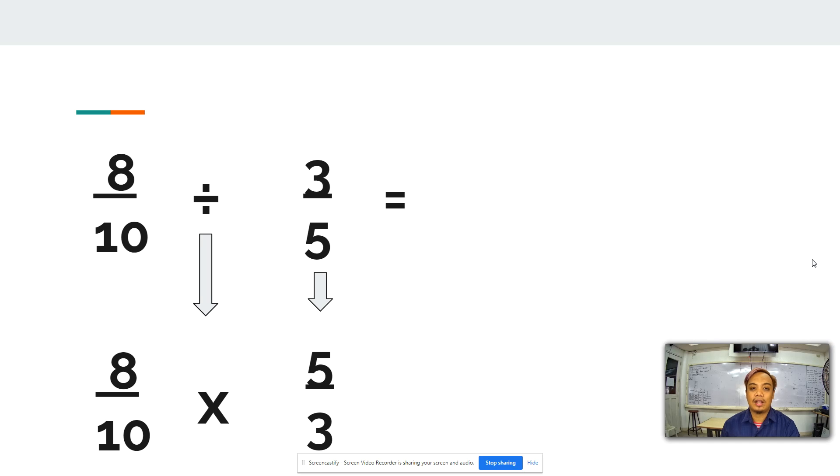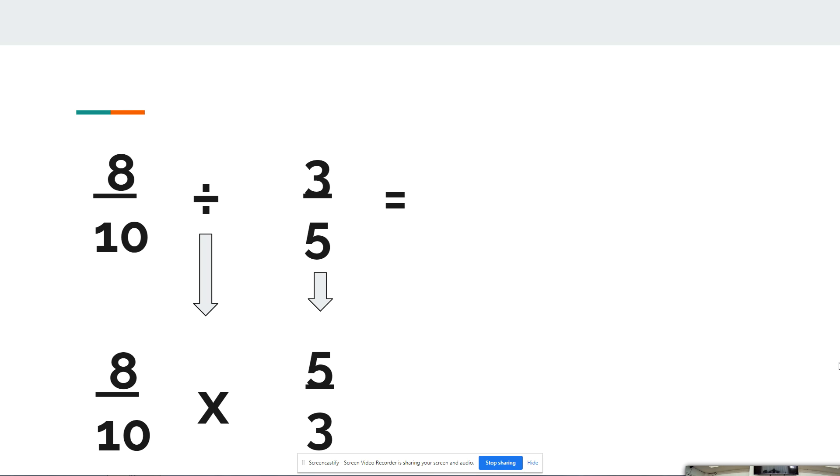We will do the process of multiplying fractions. We will multiply the numerator to the numerator. 8 times 5 equals 40, and 10 times 3 equals 30.